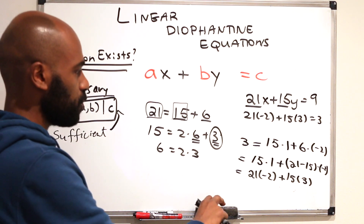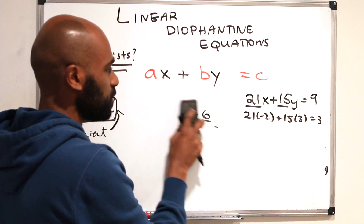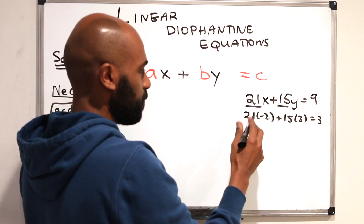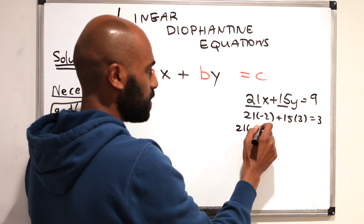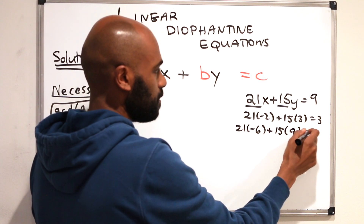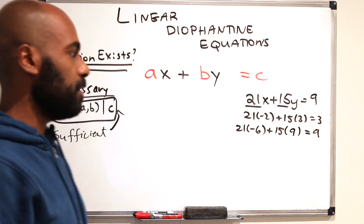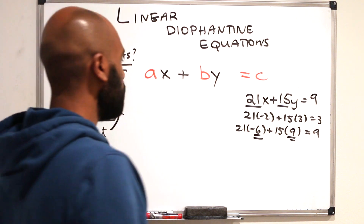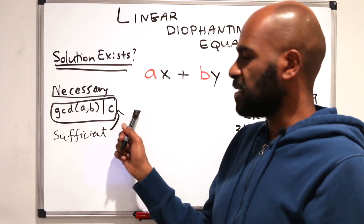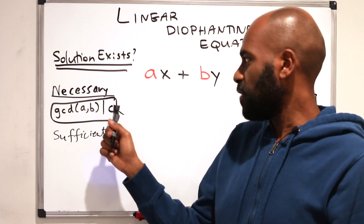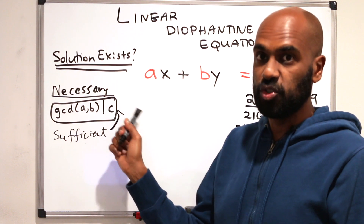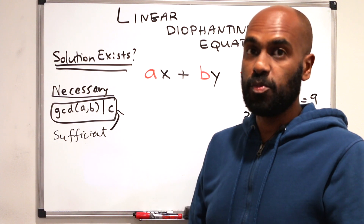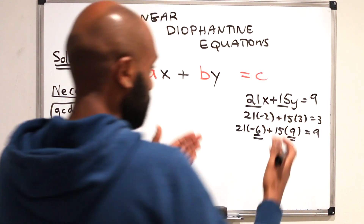That's a good review of what we did before. Now that we have this integer combination, to get a solution to our equation we multiply through by 3, giving 21×(−6) + 15×9 = 9. So our integer solution pair is x = −6, y = 9. It seems this condition is both necessary and sufficient, so let's state it as a formal theorem.